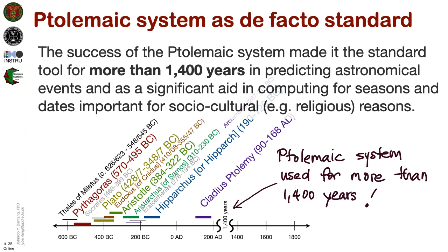Given the changes in many fronts—scientific, philosophical, and religious—the Ptolemaic system, a geocentric model, remains in wide use. The success of the Ptolemaic system made it the standard tool for more than 1,400 years since the time of Ptolemy in predicting astronomical events. The Ptolemaic system became a significant aid in computing for seasons and dates important for sociocultural reasons. Every kingdom assigned one or a team of astronomers or mathematicians to update such Ptolemaic system and remain useful until the time of Copernicus, Galileo, Kepler, and Newton.